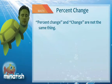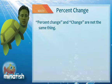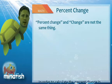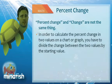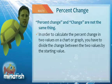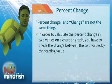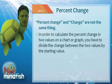Another thing the SAT will try to trick you on is confusing percent change with change. Percent change is not the same thing as change. If you go up from 5 to 10, the change is 5, but the percent change is 5 over what you started with — 5 — which is 100%. When you're trying to do percent change, it's always the change over the starting value.